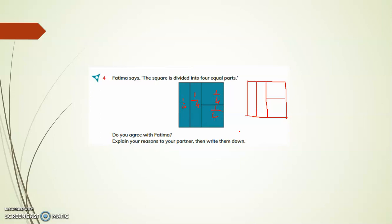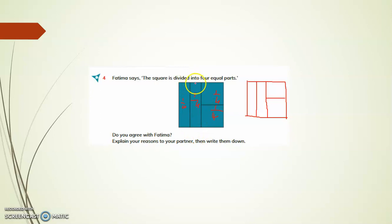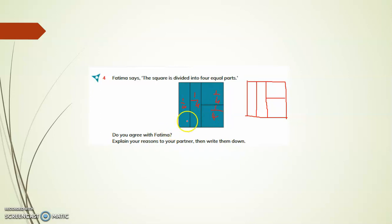What Fatima says is correct — this is divided into four equal parts. The reason being: first it is divided into half, one half is divided vertically into two equal halves, and the other one is divided horizontally into two equal parts.